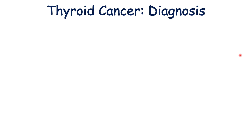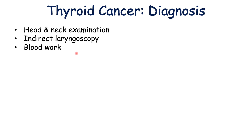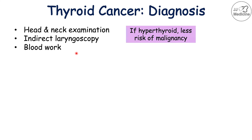Now let's talk about how thyroid cancer is diagnosed. A head and neck examination is important — we talked about thyroid nodules as an important sign. Some other examination methods include indirect laryngoscopy. Blood work is also important, including thyroid hormones such as TSH, T3, and T4. If the patient comes back as hyperthyroid with a low TSH and elevated T3 and T4, this is actually a sign that the thyroid nodule is less likely to be a malignancy.